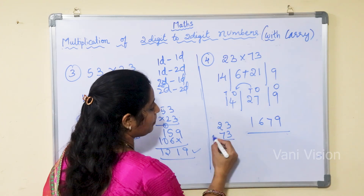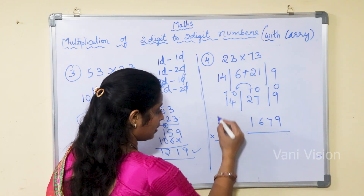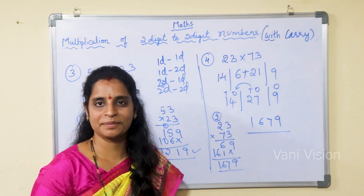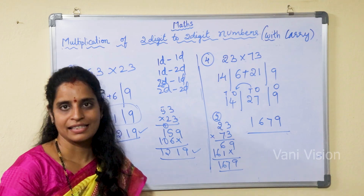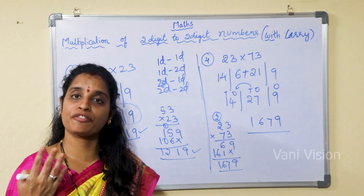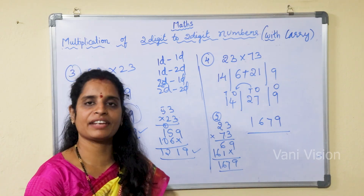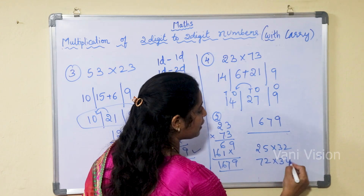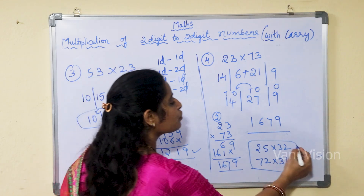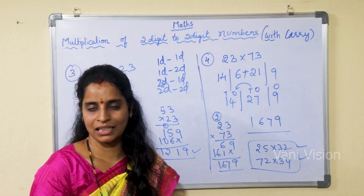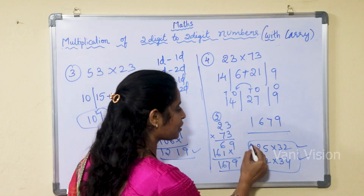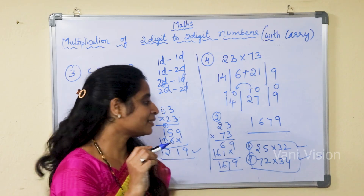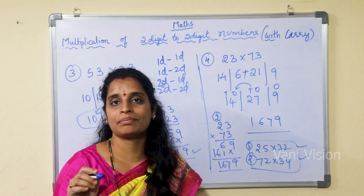Now we will check the answer. 73: 3 threes are 9, 3 twos are 6, 7 threes are 21, 7 twos are 14 — so 9, then adding gives 7, 6, 1. Is it correct? Right — you won't feel like it is difficult. If you practice more and more examples, you are going to do it the easy way. Any big number, any 2 digit numbers like 25 into 32 or 72 into 34 — you can do it. Now you are going to do these two numbers and comment the answer. The first question is 25 into 32, and the second question is 72 into 34. Comment the answers in the comment box.